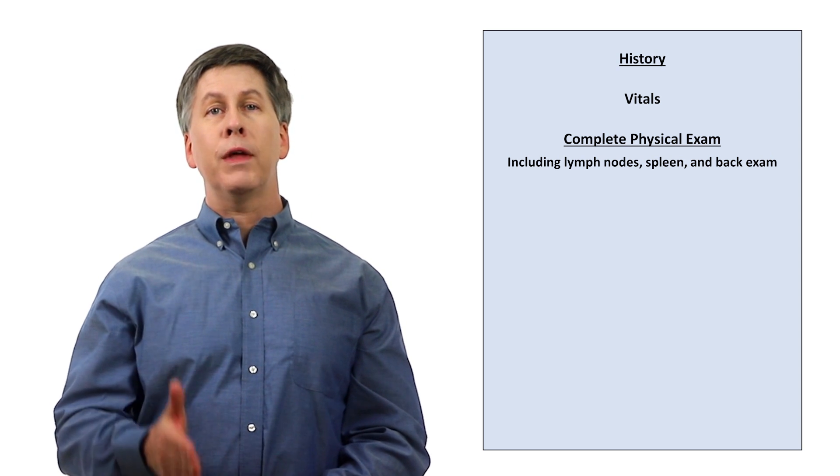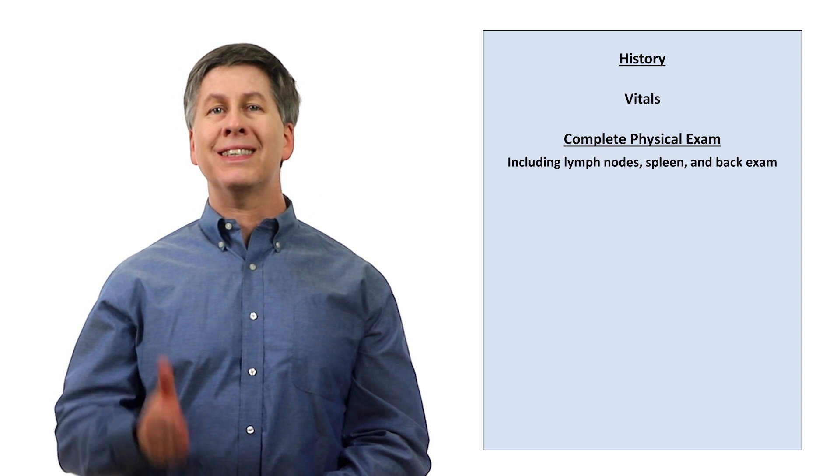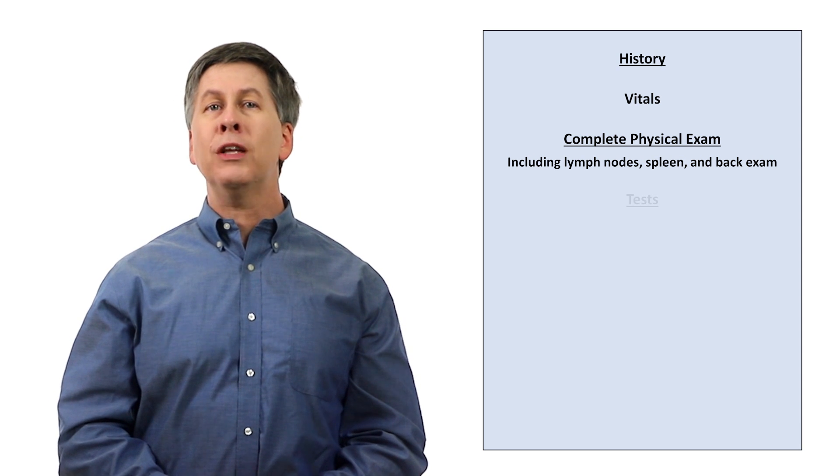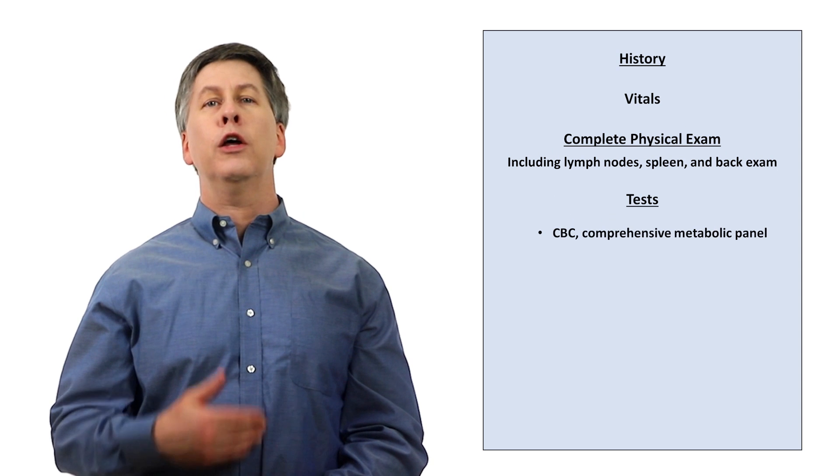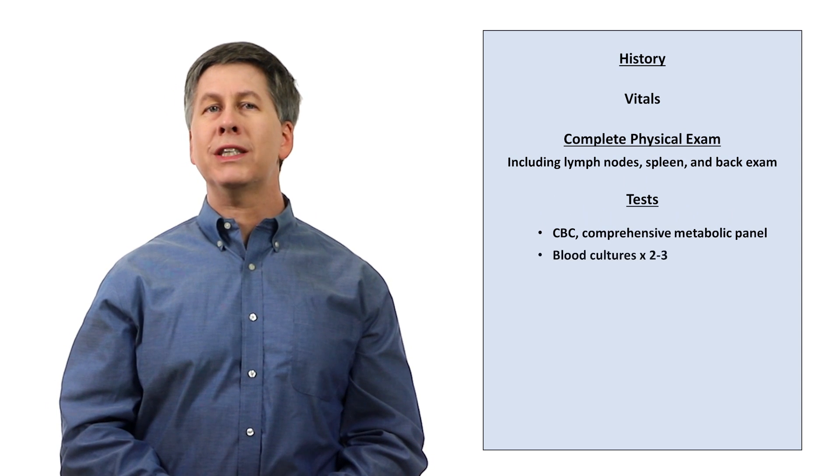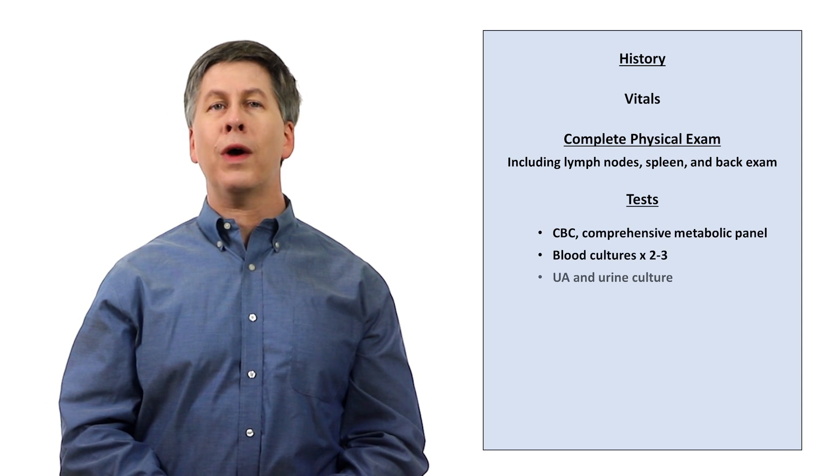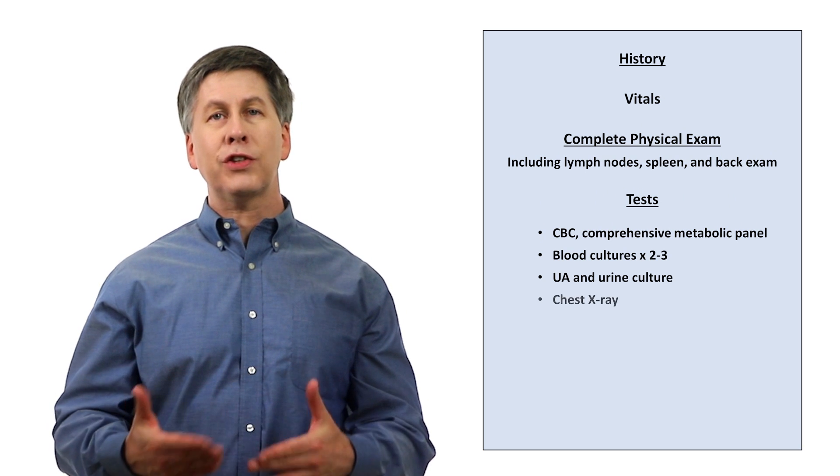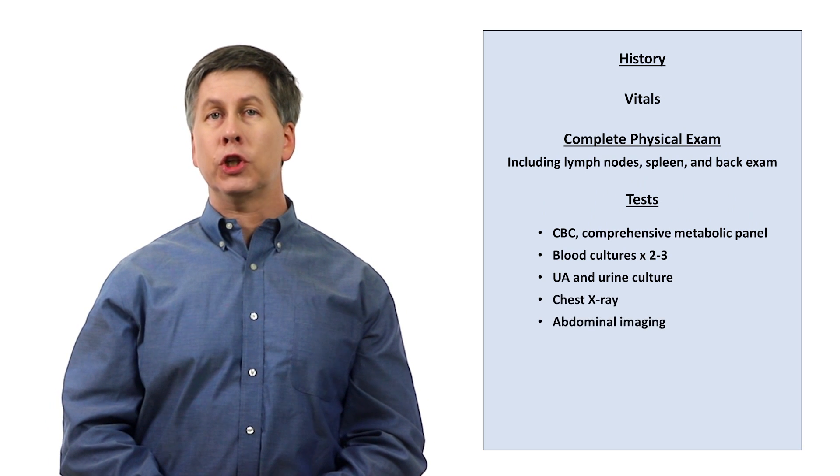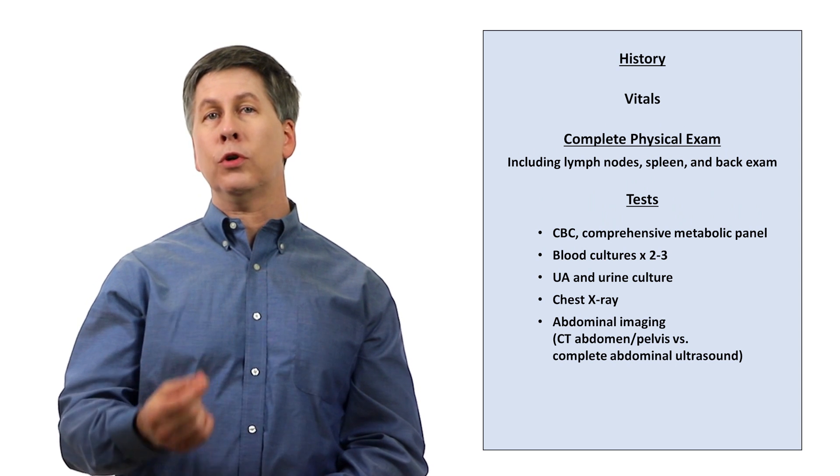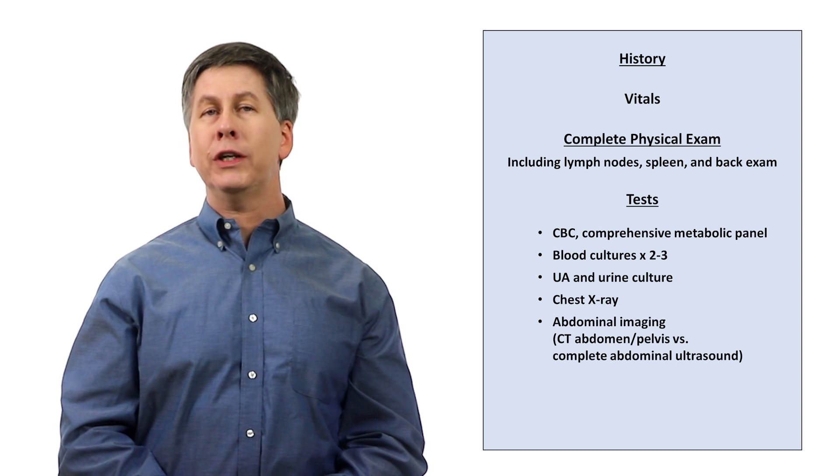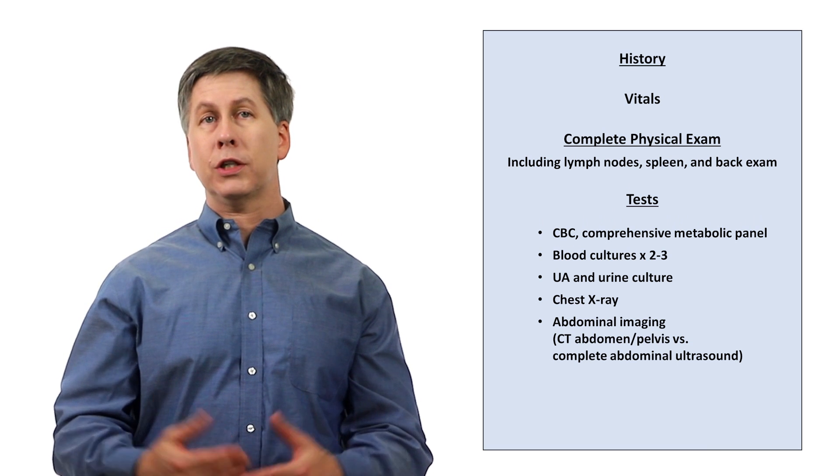As mentioned previously, in order for a patient to even be considered to have an FUO, a preliminary workup must already have been done. This includes a CBC, metabolic panel, two to three sets of blood cultures, a UA and urine culture, a chest x-ray, and abdominal imaging. I prefer a CT of the abdomen and pelvis over a complete abdominal ultrasound, as long as there are no potential contraindications, such as pregnancy.